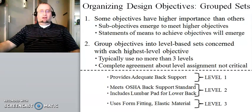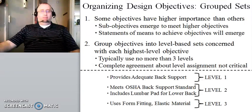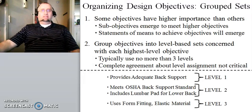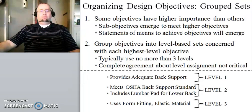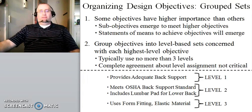The suggestion is to create that hierarchy by grouping objectives into level-based sets centered on the highest level objective. We want to keep things simple and easy to understand, so typically we wouldn't use more than three levels at most. The idea is to get buy-in from all stakeholders in the design process, but everybody doesn't need to be in absolute and complete agreement about the levels of assignment — whether something should be in level three or level two.